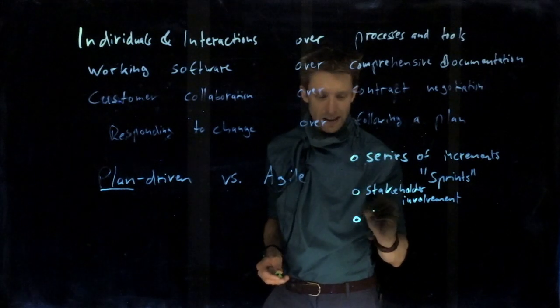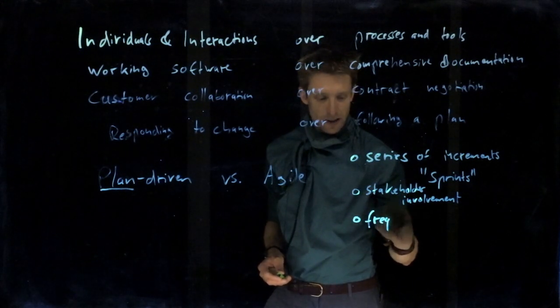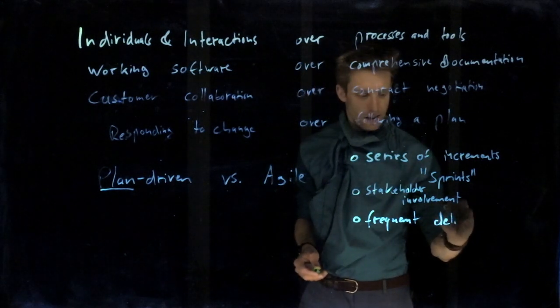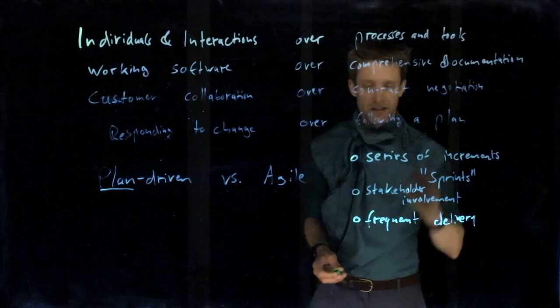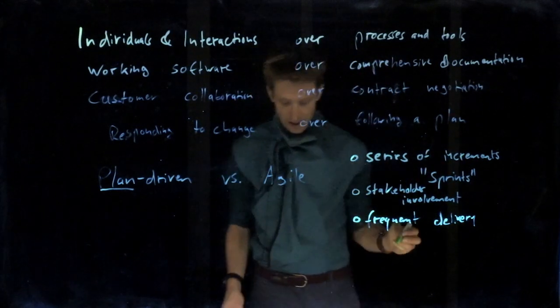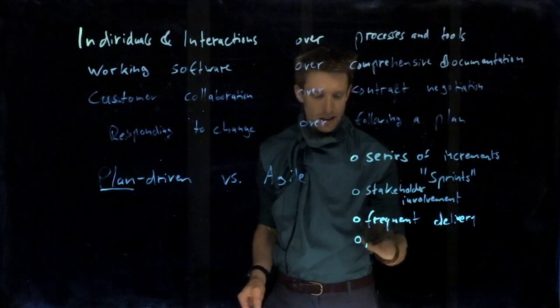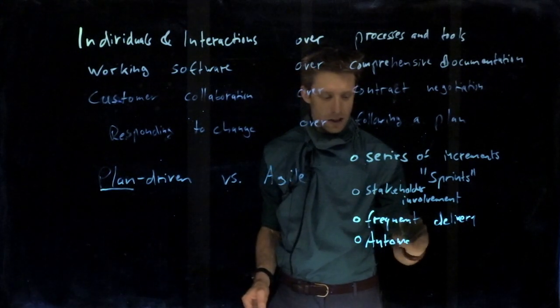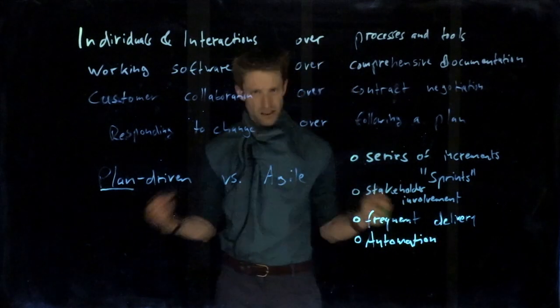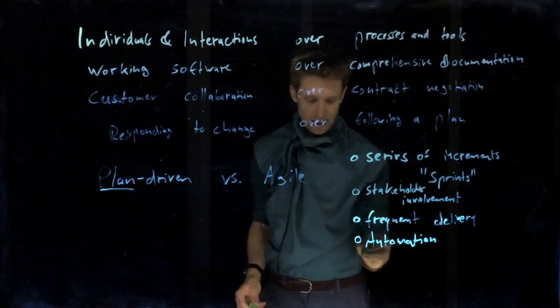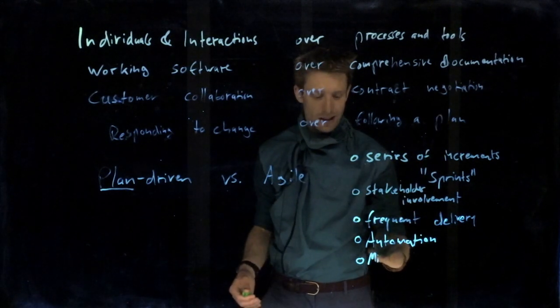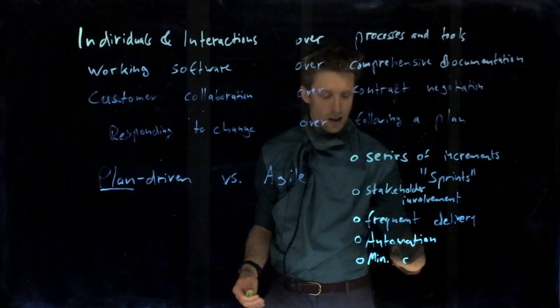There is frequent delivery. It's not like you get a running system after a year, but the idea is, ideally, after each of these increments, get some working software product. Usually, this requires a fair bit of automation, for example, automated testing, so that you don't need months for testing, for instance.